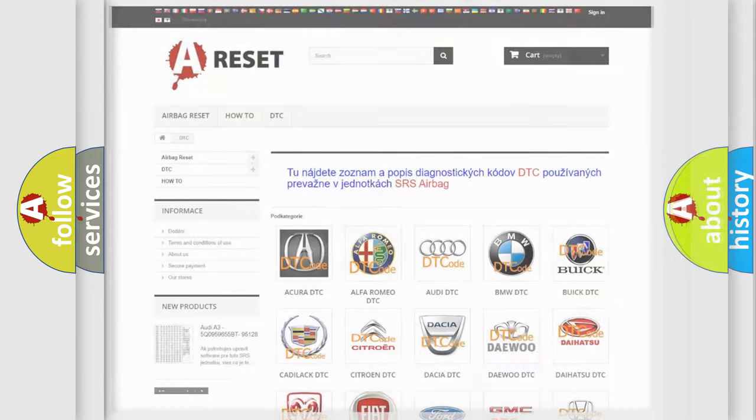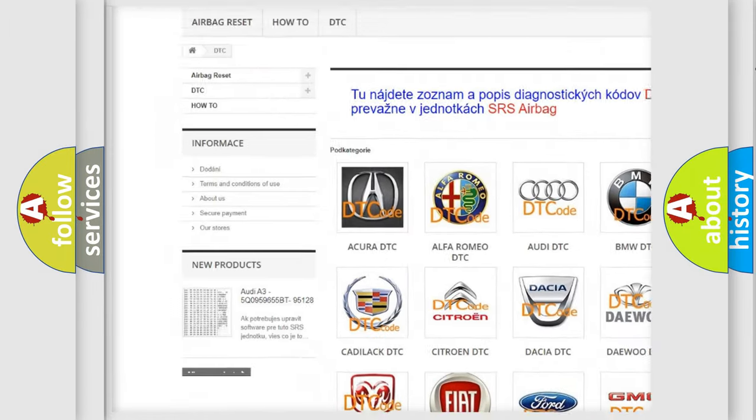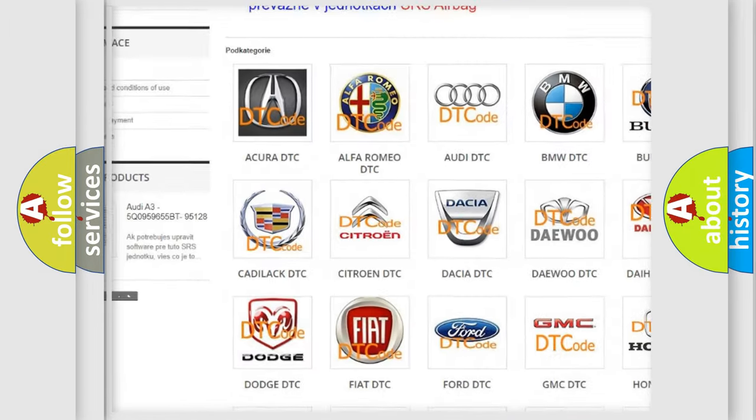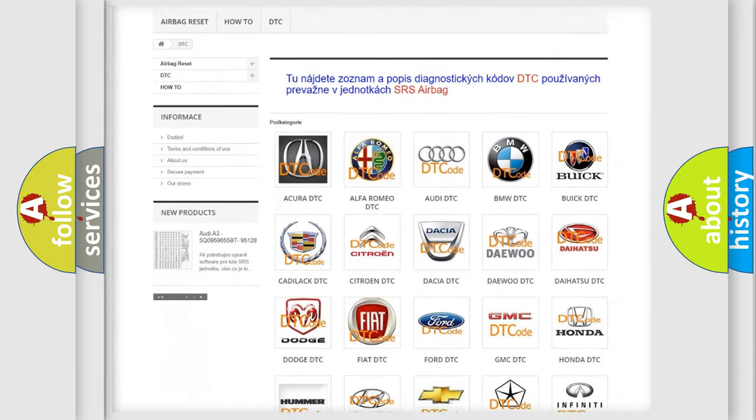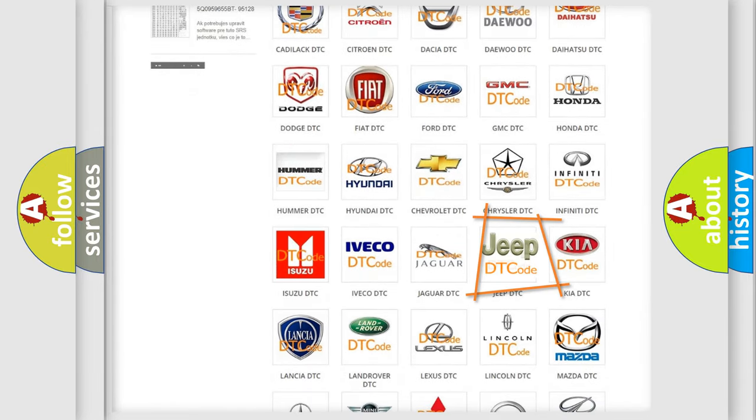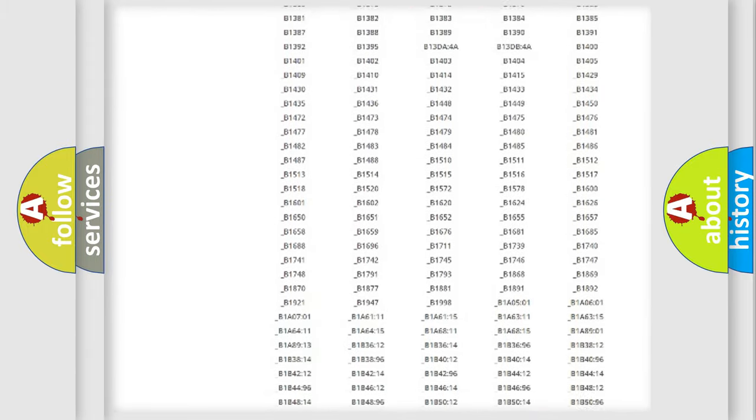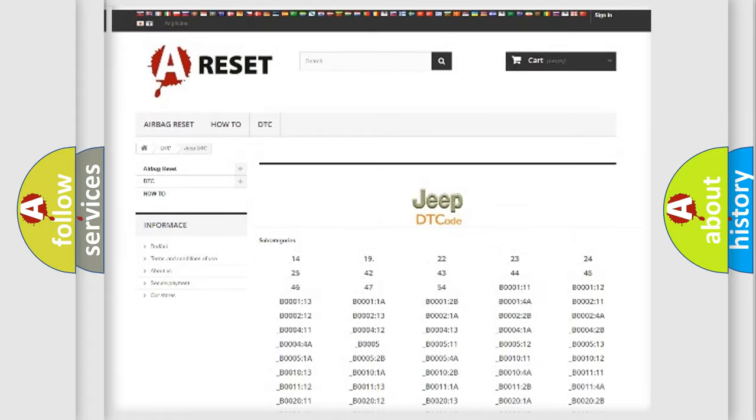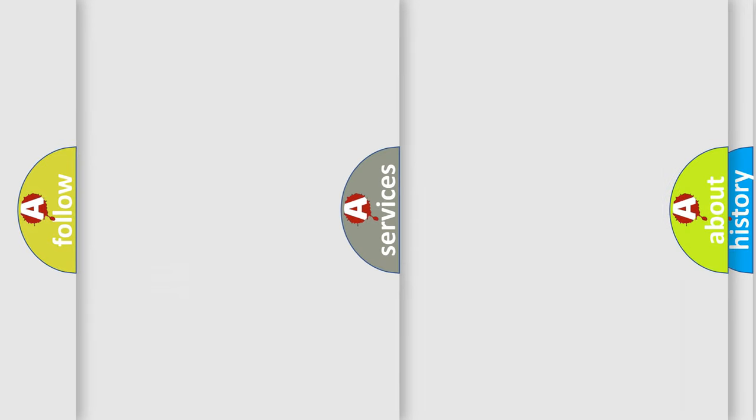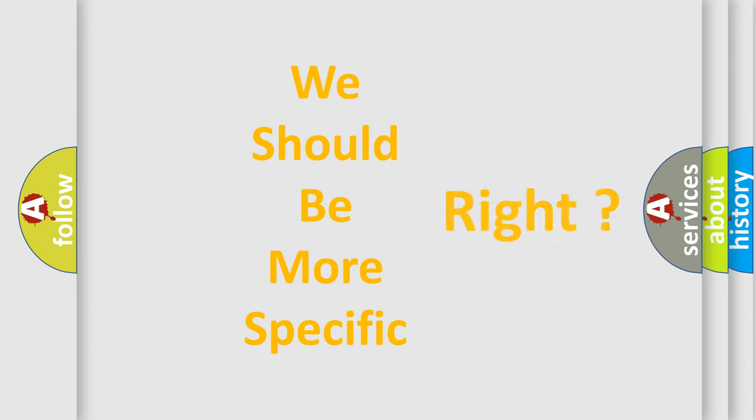Our website airbagreset.sk produces useful videos for you. You do not have to go through the OBD2 protocol anymore to know how to troubleshoot any car breakdown. You will find all the diagnostic codes that can be diagnosed in Jeep vehicles, and many other useful things. The following demonstration will help you look into the world of software for car control units.